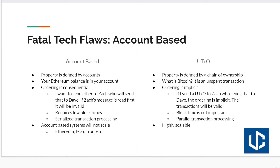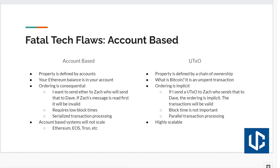That's going to be very easy for the Bitcoin miners to evaluate. If you look at Ethereum, order is not implicit, and therefore the order in which messages get read is extremely consequential, and this presents a really big problem. Imagine I wanted to send one Ether to Zach. Zach has an account with a zero balance, and he's going to send that one Ether on to Dave after he receives it. If Zach's message gets read by the miners first, it's going to be invalid. So the order really, really matters — there's no implicit order.